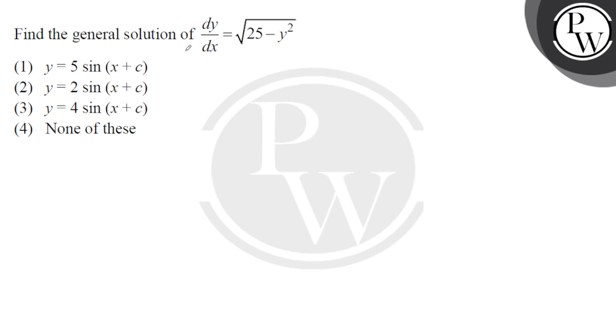Hello guys, here we have a question: Find the general solution of dy/dx = √(25 - y²). So here we go, dy upon y square...